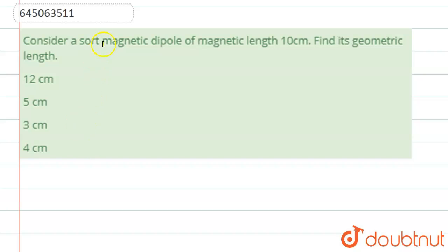The question says that consider a short magnetic dipole of magnetic length of 10 centimeters. Then find its geometric length. So we know that magnetic length and geometric length are basically different. I'll explain you what is geometric length and magnetic length in brief.